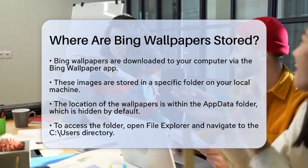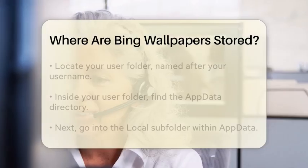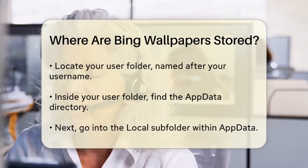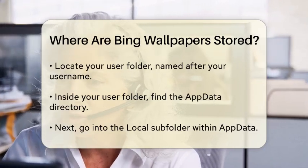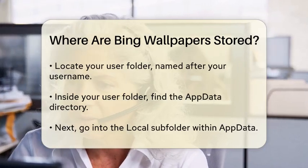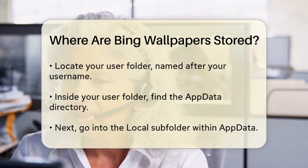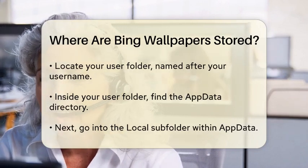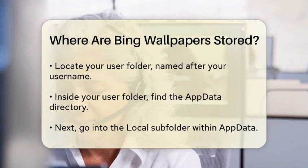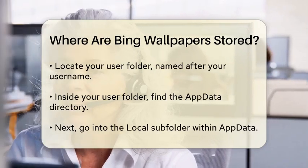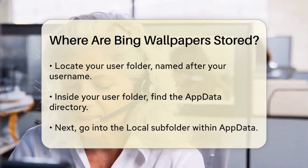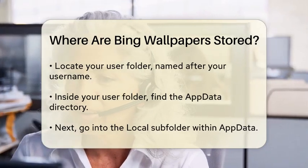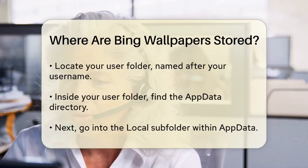The answer lies in a specific folder on your local machine. To find it, you need to navigate to the AppData folder, which is usually hidden by default. Here's how you can do it. First, open File Explorer and go to the C: Users directory. From there, find your user folder — it will be named after your username.